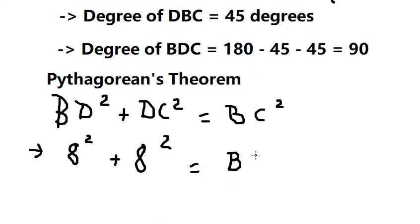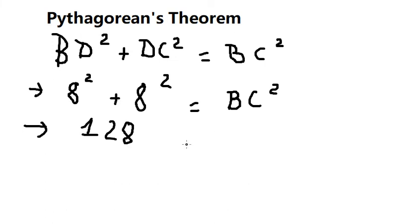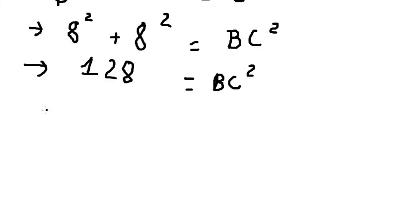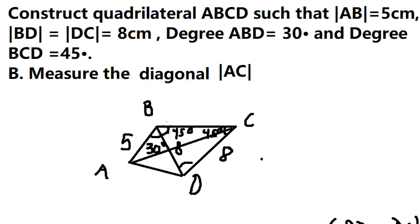We calculate and we have 128. Now we can find BC, which is the square root of 128, giving us 8 times the square root of 2. After finding BC, we have AB and the degrees of ABC, which is 30 degrees plus 45 degrees giving about 75 degrees.